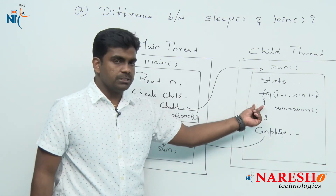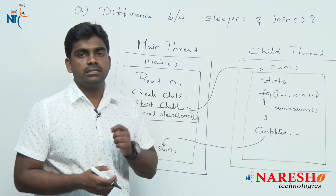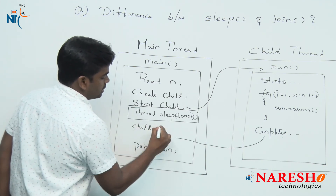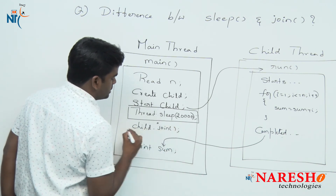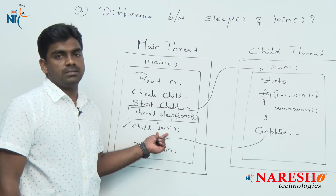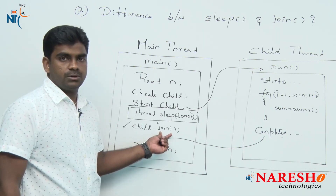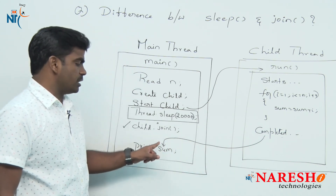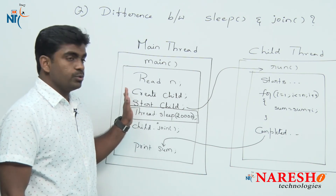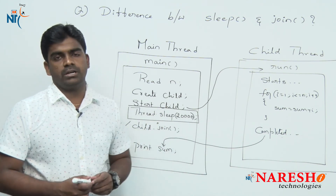We cannot decide how much time the child thread will take to complete the execution and calculations. In that situation, we should go for the join method. From the main thread, we are joining the child thread: child dot join. This means the main thread should wait until the child thread completes its execution. Then automatically the control will come to the sum print statement. So, whenever one thread's execution depends on another thread's completion, instead of using the sleep method, we should go for the join method.